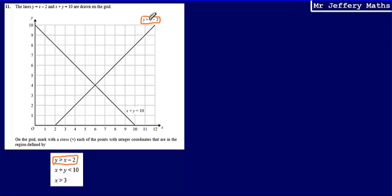Because if y is equal to x minus 2, that's all of the points, all of the coordinates which are on that line, then that means that all of the coordinates which are greater than that are going to be in the region that I've just shaded in here.